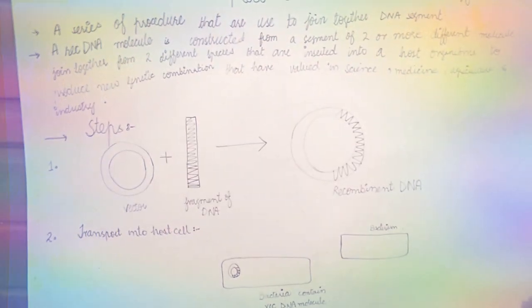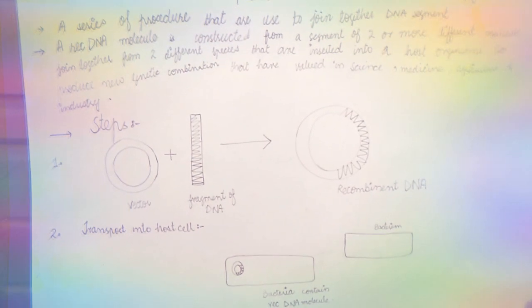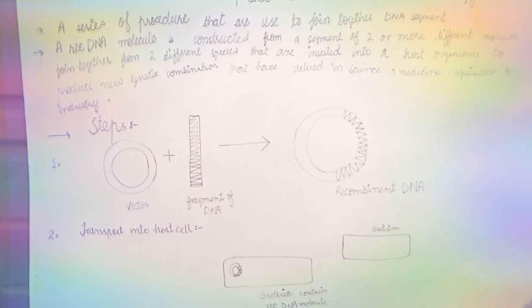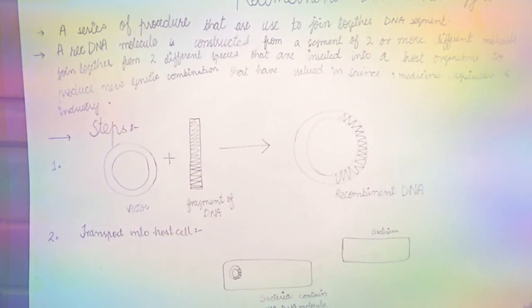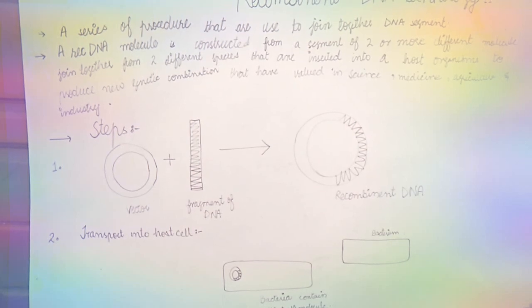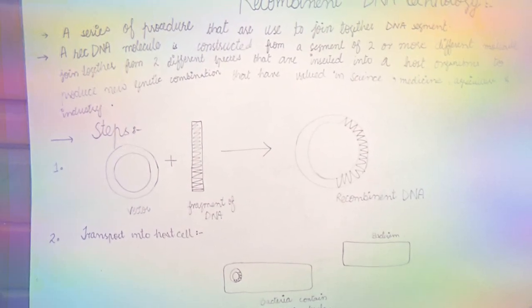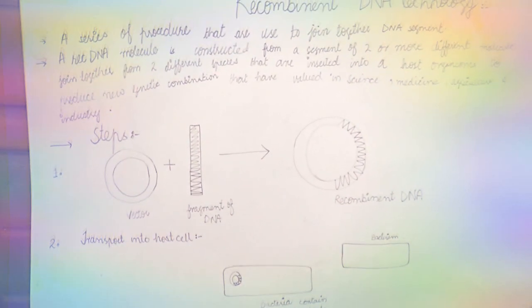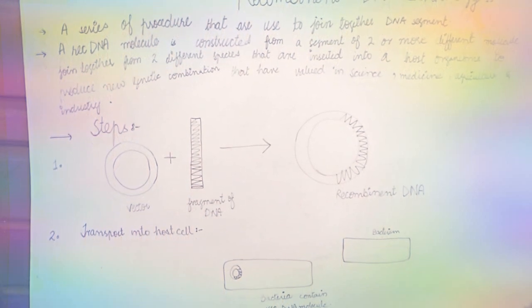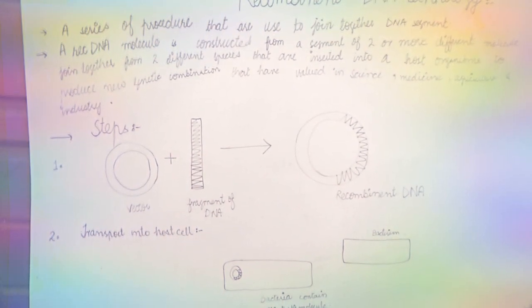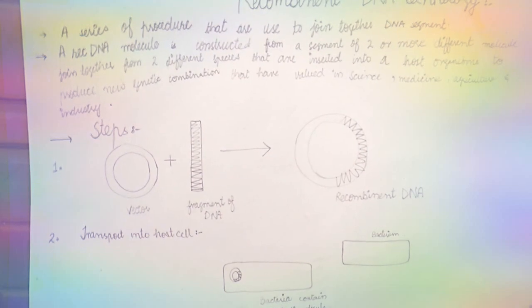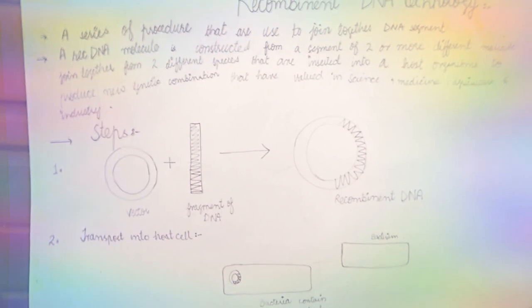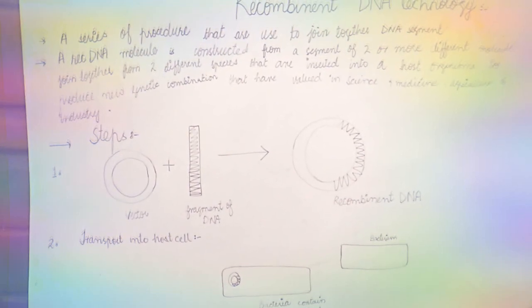Now we introduce the recombinant DNA molecule into a host cell. The second step is transport into a host cell. When we introduce a recombinant DNA molecule into any host cell, we call this process transformation. Then it is performed that we separate the transformed cells, which are the host cells that take up the recombinant DNA molecules, from non-transformed cells.